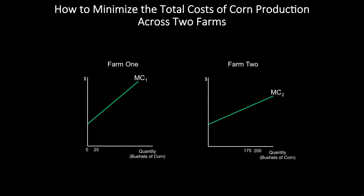To do that, let's begin with a simpler problem. Suppose that you're a central planner, and you would like to allocate production of corn across your two farms in order to minimize your total cost for any given production quantity. How do you do this?